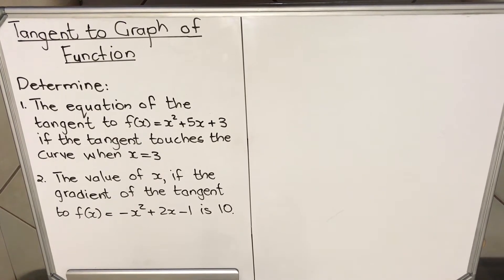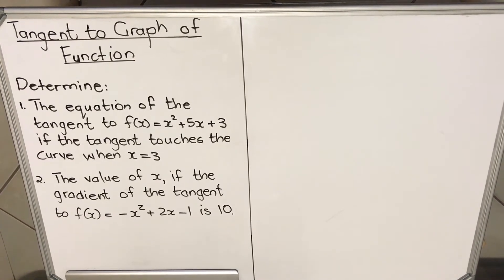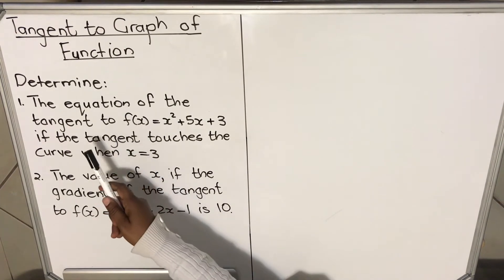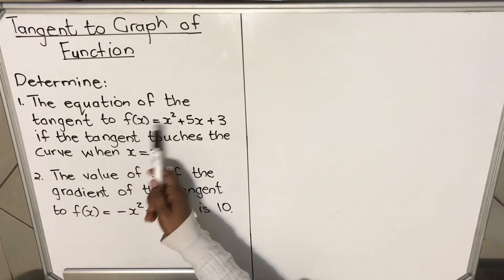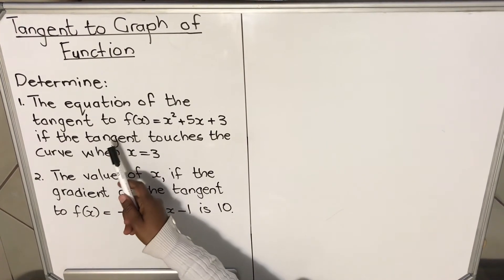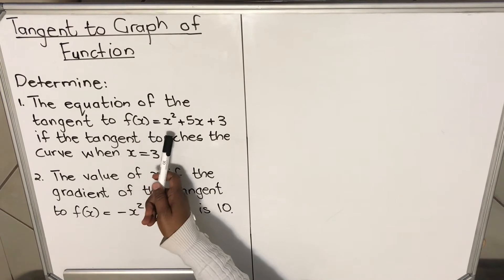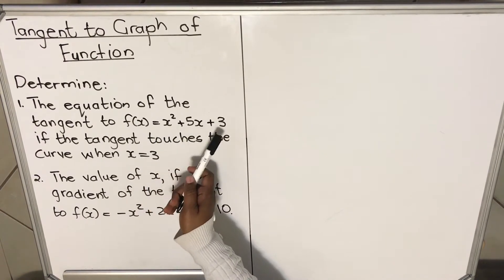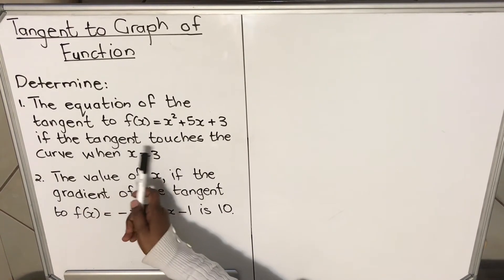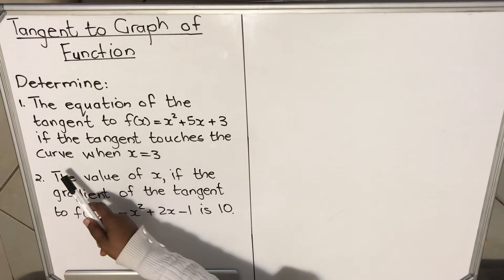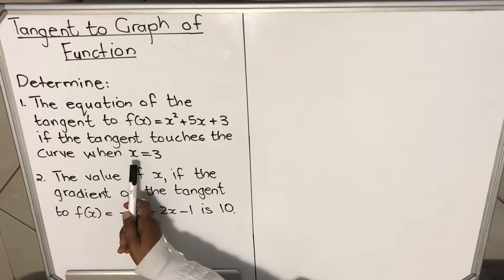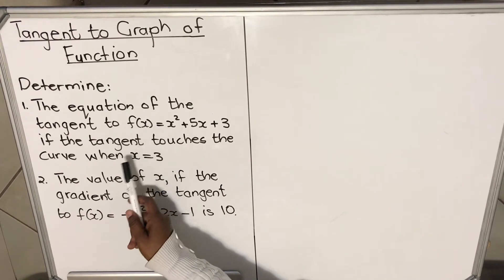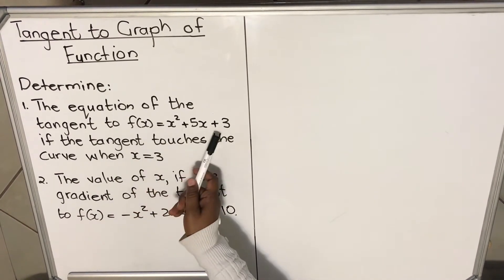Let's start with the first one. The question says: determine the equation of the tangent to f at x, where f(x) is equal to x squared plus 5x plus 3, if the tangent touches the curve when x is equal to 3. The tangent is touching this function where x equals 3.